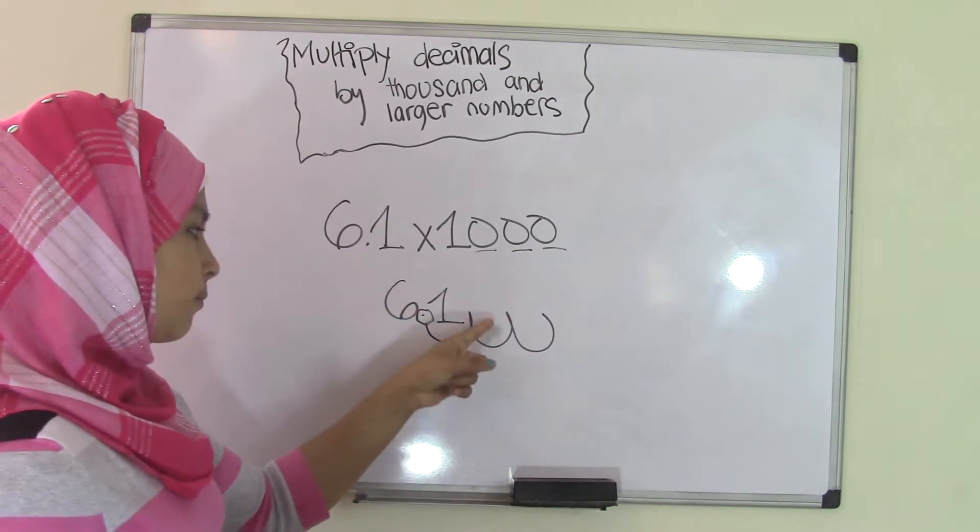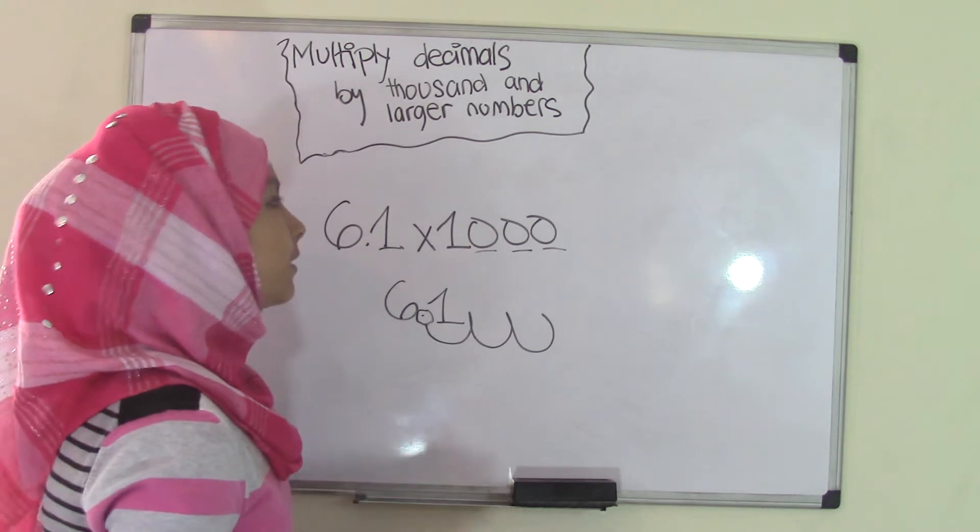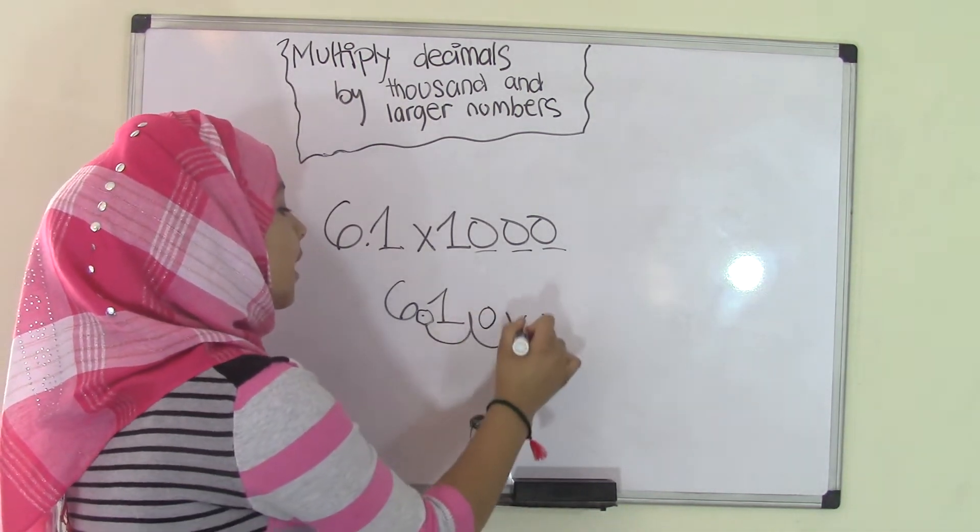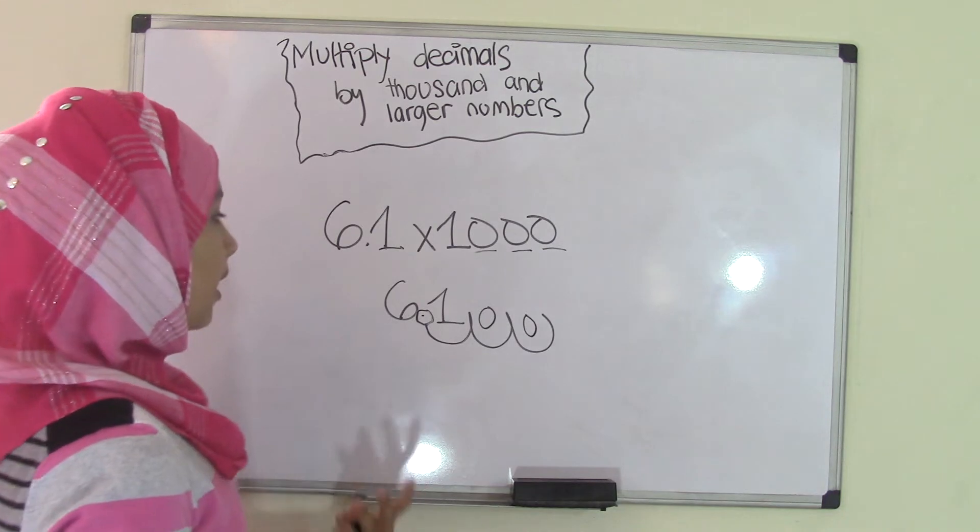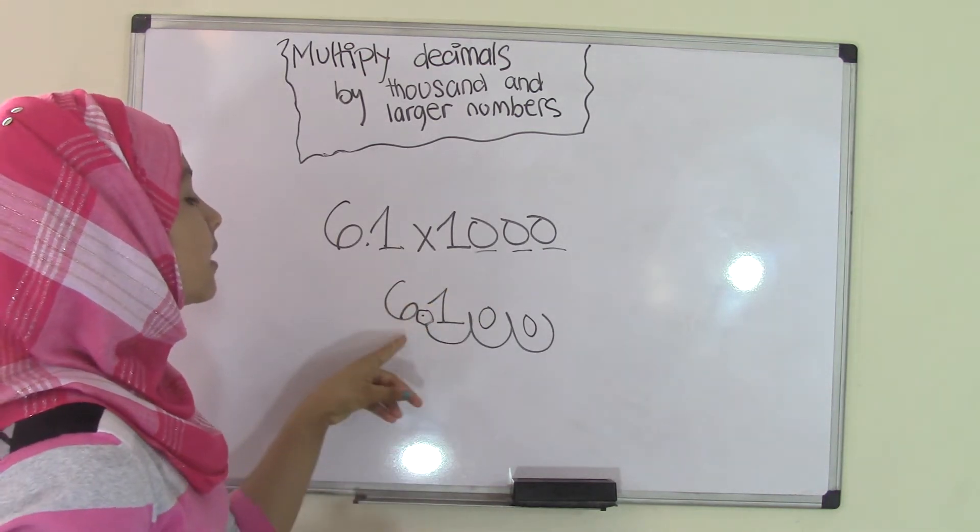Now, as you can see, there are two gaps here, right? What are we going to do with the two gaps? Well, this is really simple. All you do is add zeros. So, that means the product of 6.1 times 1,000 equals 6,100.